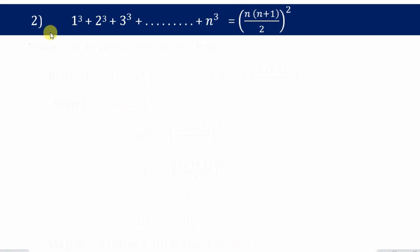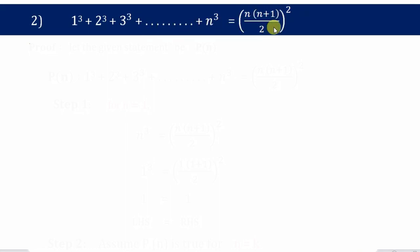Hello students. In this video we are going to solve question number 2 from exercise 4.1 from the PMI chapter. The given statement is 1³ + 2³ + 3³ + 4³ + ... + n³ equals [n(n+1)/2]².